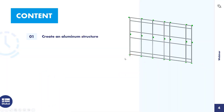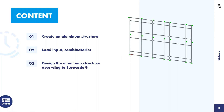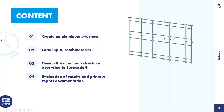The agenda today: the first point is the creation of an aluminum structure — a facade structure as shown on the right side of the screen. That's the model we'll use today. After the creation, we'll cover load input and combinatorics. Then Sonja will carry out the design according to Eurocode 9, followed by evaluation of results and documentation in the printout report. I now hand over the screen to Sonja.